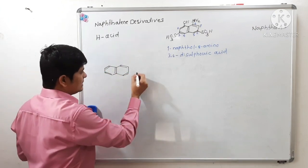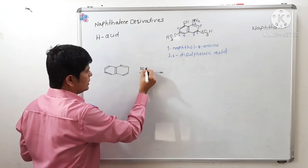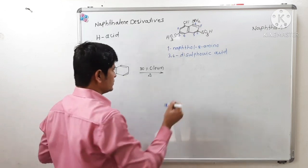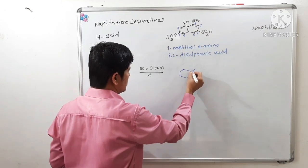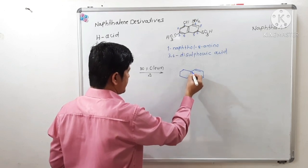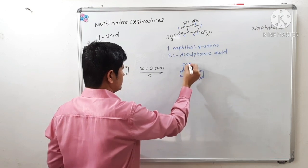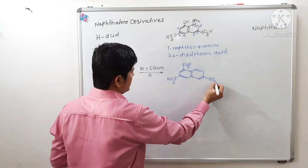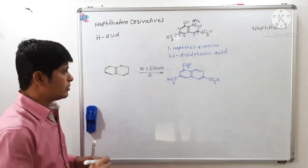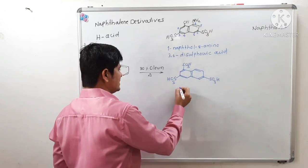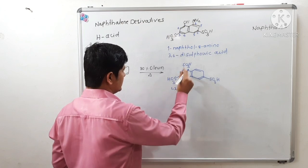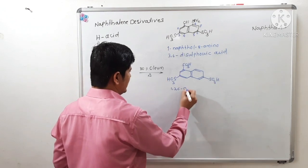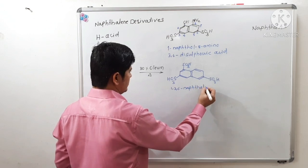Naphthalene on reaction with 30% oleum gives a trisulfonated product. That means there is introduction of 3 sulfonic acid groups. This is 1,3,6-naphthalene trisulfonic acid.